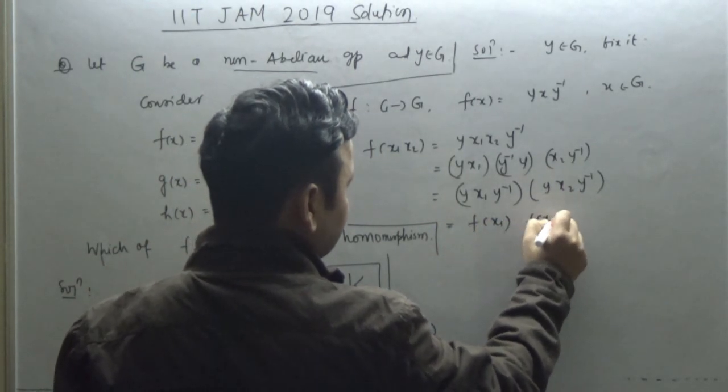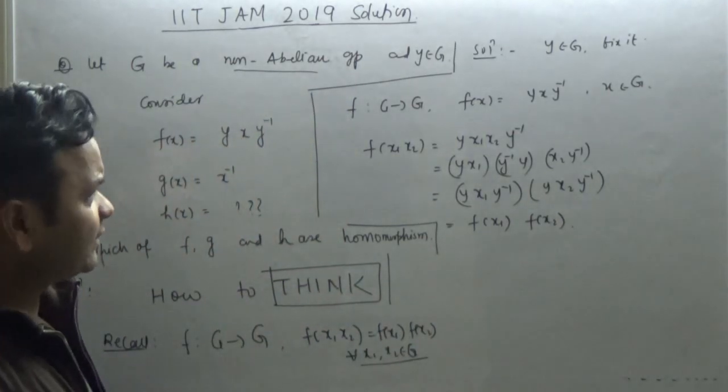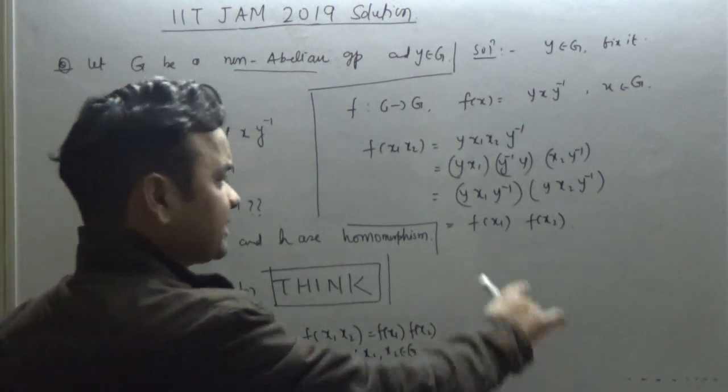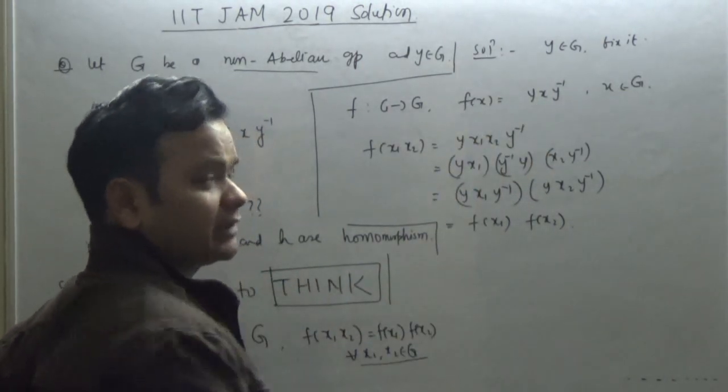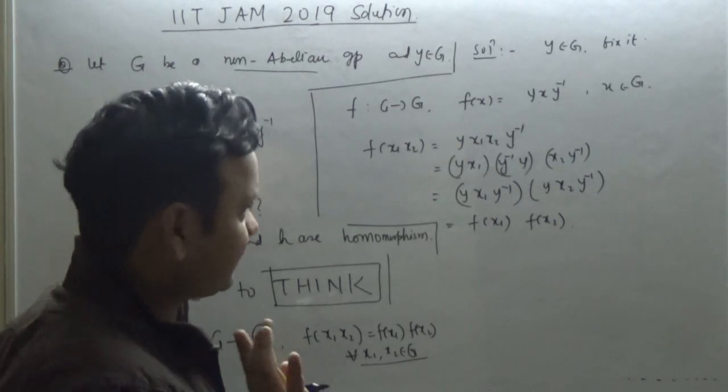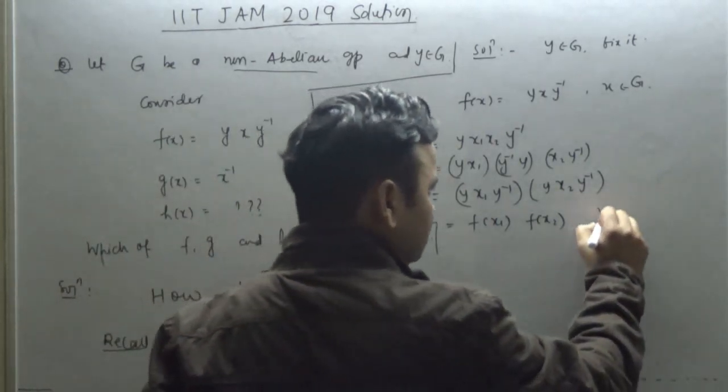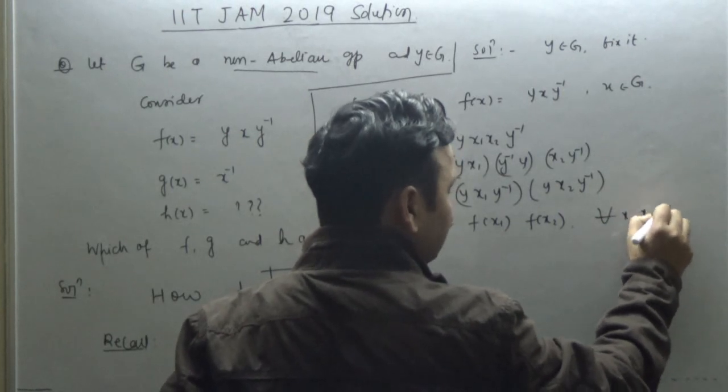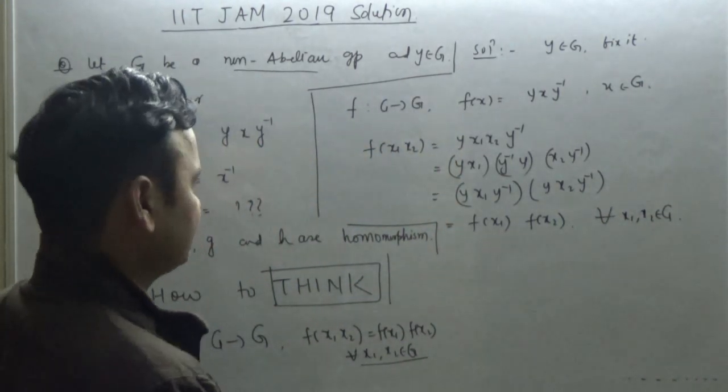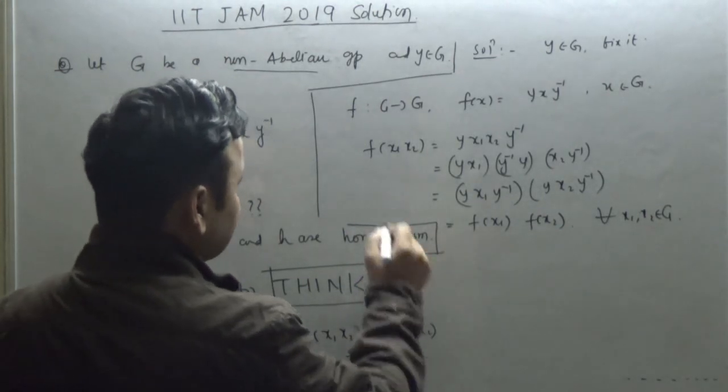Now just plug this: y x1 y inverse times y x2 y inverse. This is nothing but f of x1 times f of x2. So f of x1 x2 is equal to f of x1 times f of x2. This holds for all x1 and x2 in G, hence my f is a homomorphism.